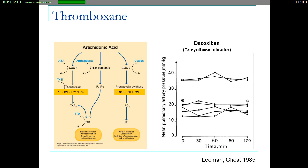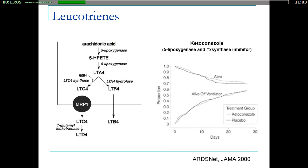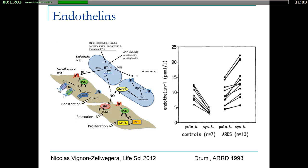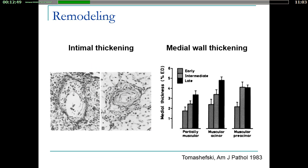On top of that, you have many vasoconstrictive mediators: Thromboxane, Leukotrienes, and Endothelins. During ARDS, when you measure the concentration of Endothelin, you have more Endothelin after the pulmonary circulation compared to what is measured in the pulmonary artery. All those mediators could constrict the pulmonary vessels.